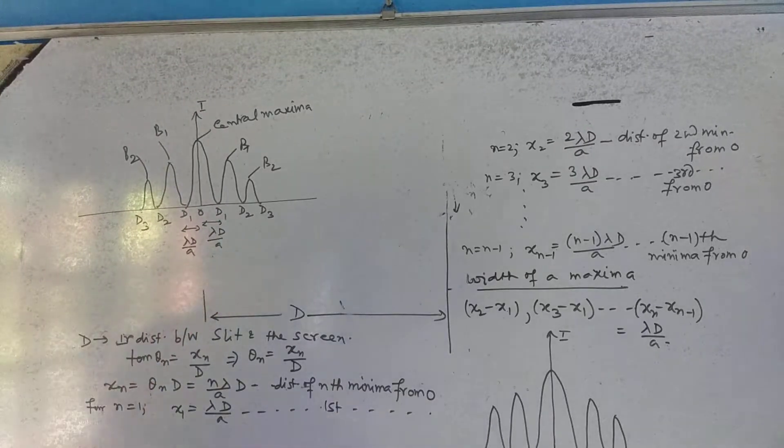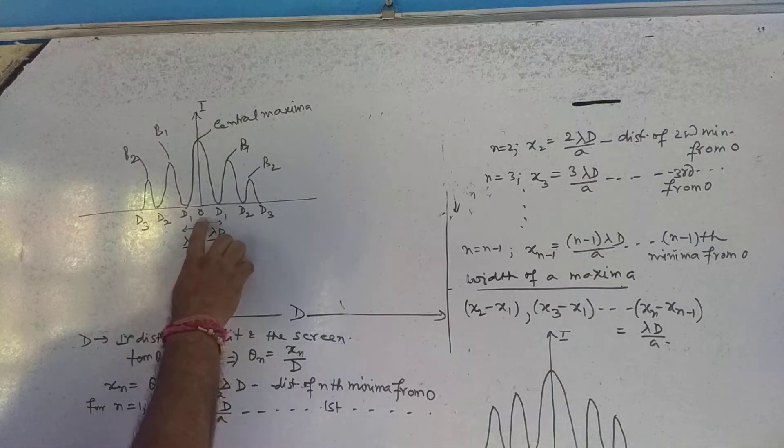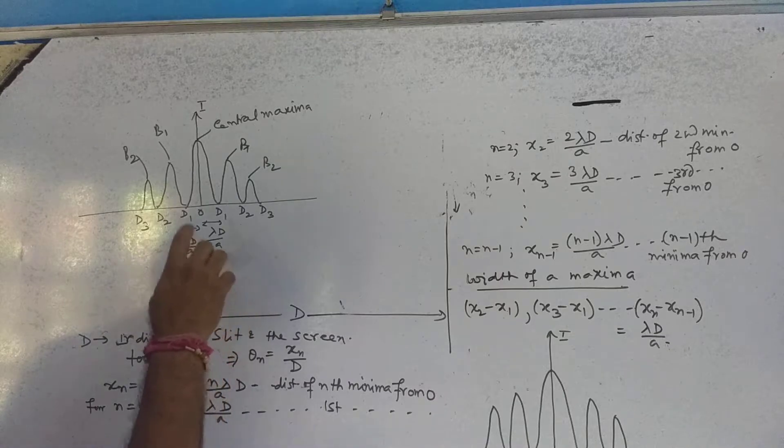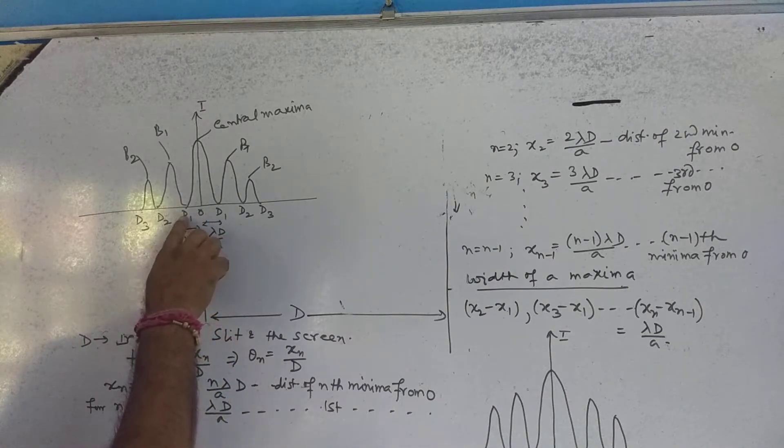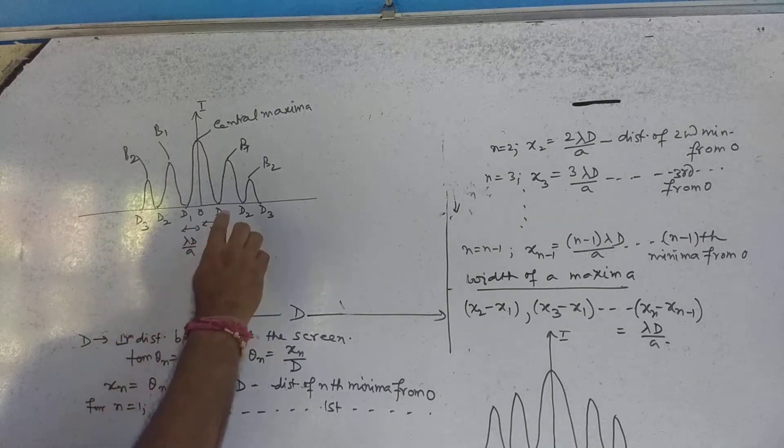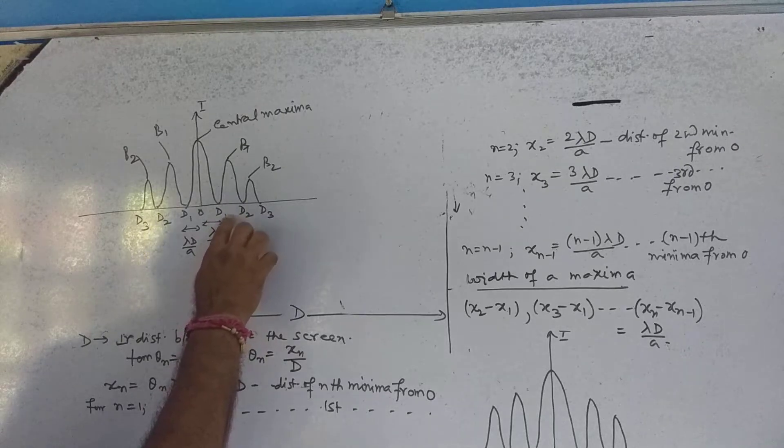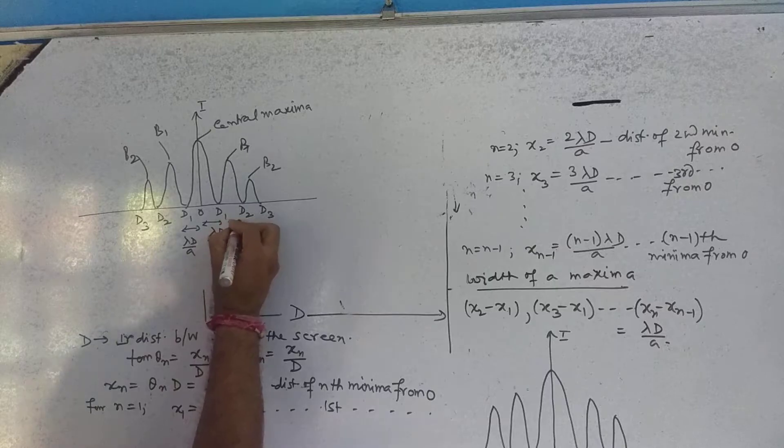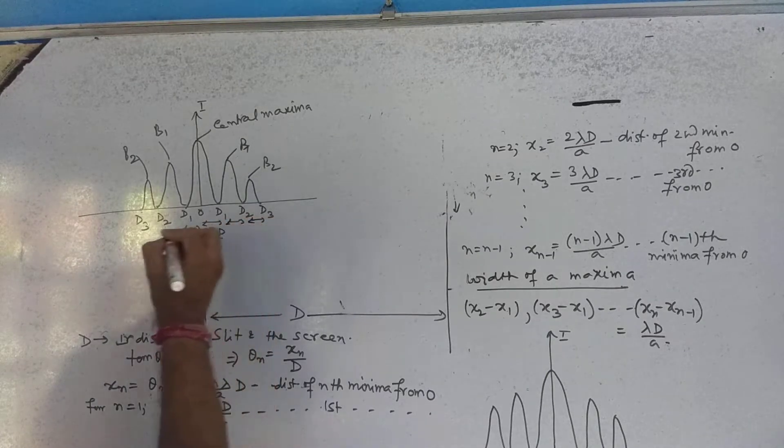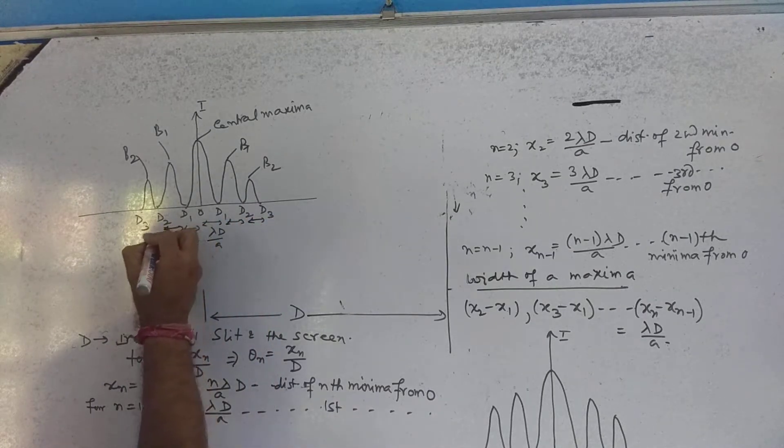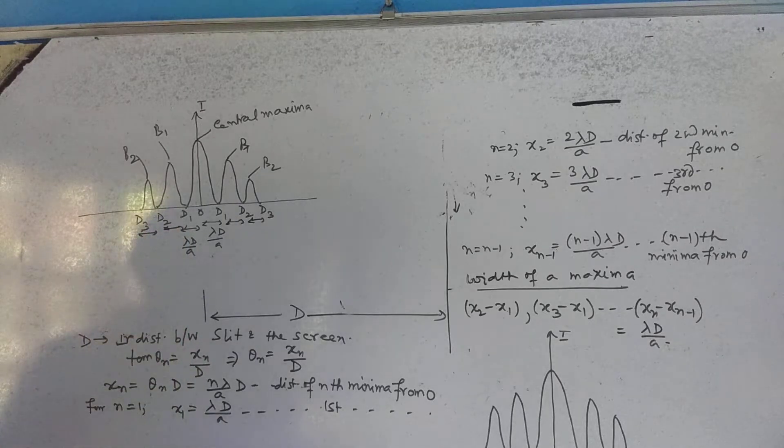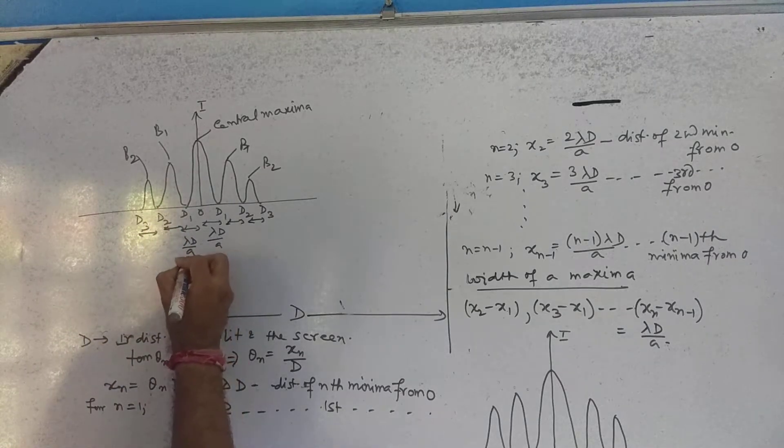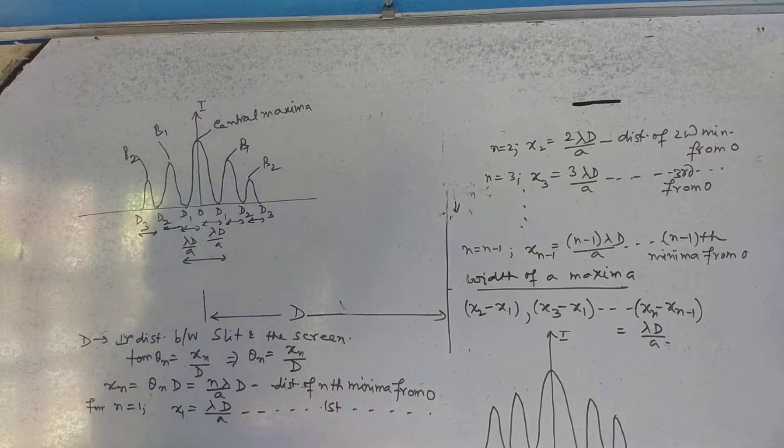First dark to O to first dark, the distance is lambda D by a. D1 and D2, the width of a maxima is lambda d by a. Second lambda d by a, the central maxima is double.